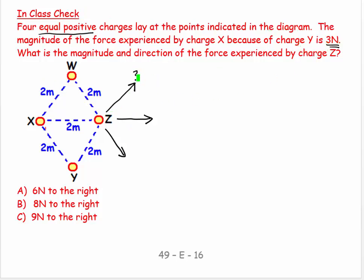The example they gave was three newtons, so this is three newtons in that direction, three newtons in that direction, and three newtons in that direction. Now the exercise becomes can I add these up vectorially?